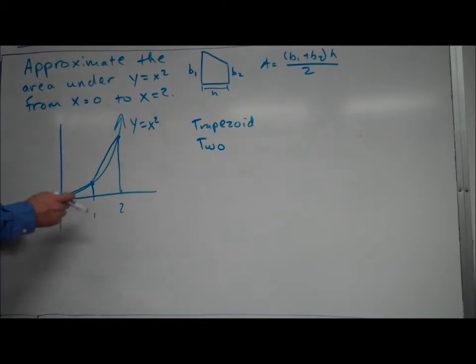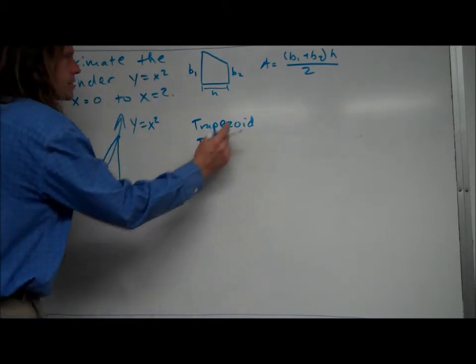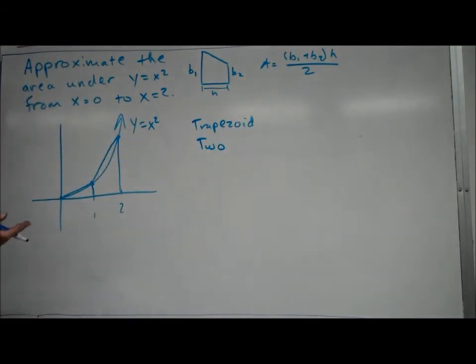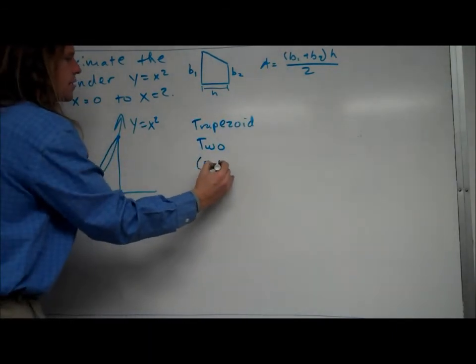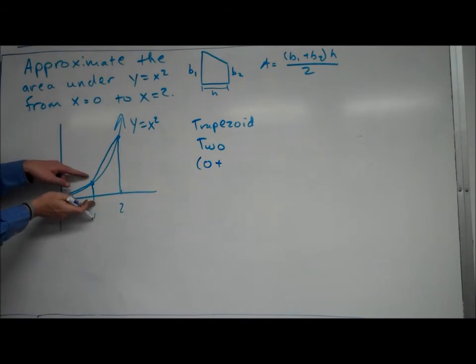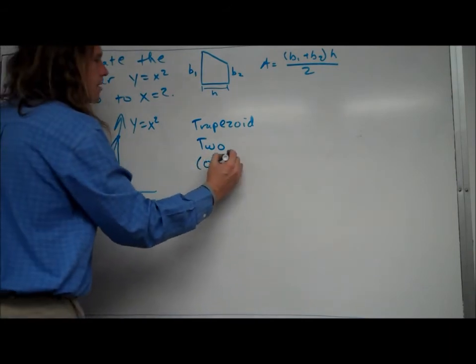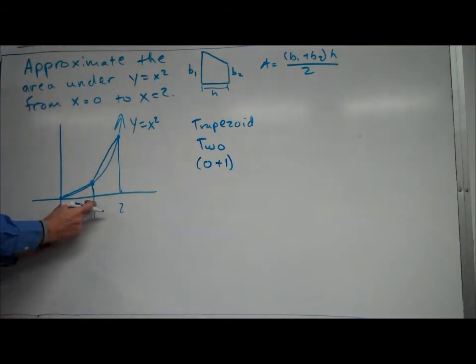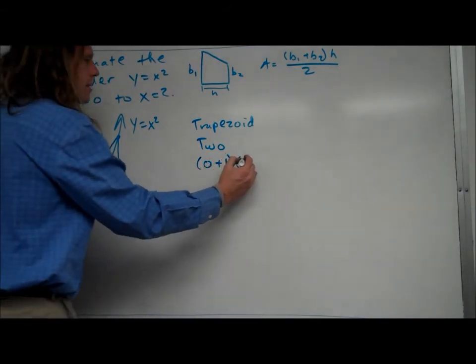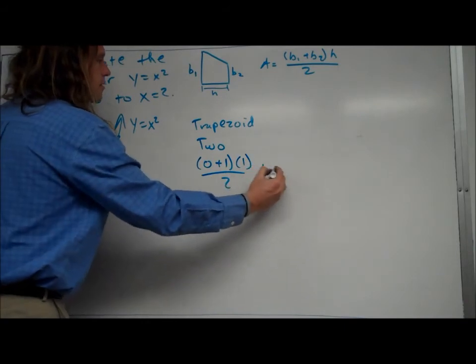So the first one, let's see here, we'll use this formula. Base one is just zero, so I'll put zero in. Base two is whatever that height is, so we know that at one, if we plug it in, the height there is one. The height of this is the distance between the two bases, which is, in this case, one, and we just divide that by two. It's part of the formula.